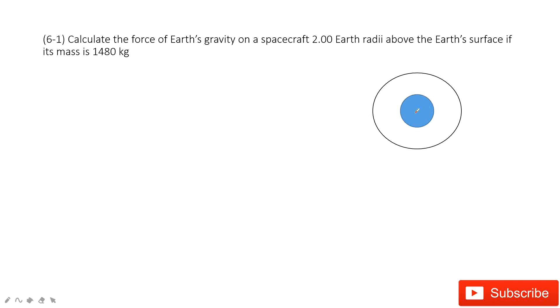Here we can see we have Earth, and then above the Earth, three times the radius, we have a spacecraft. We know this is R. If this is R, this is three times R. So the radius for this spacecraft is 3R. This is the first point we need to take here.